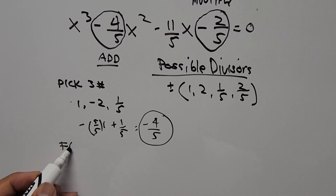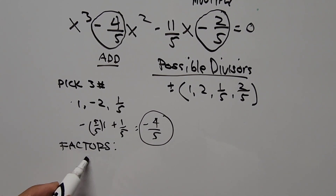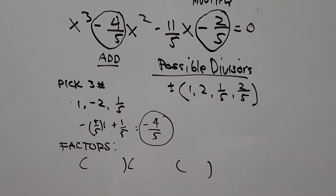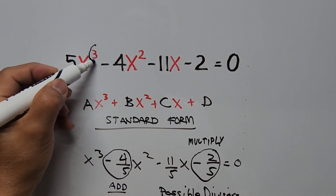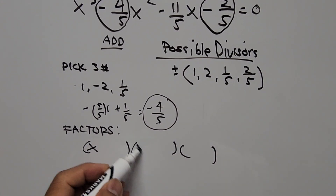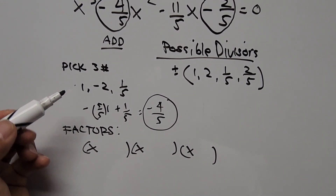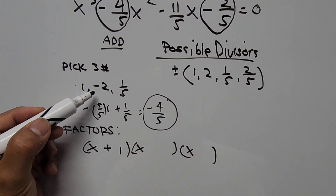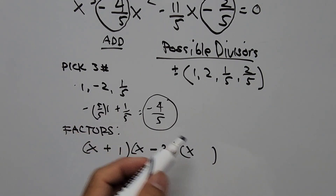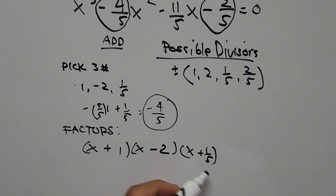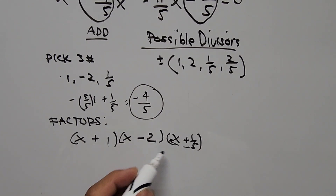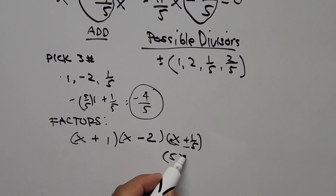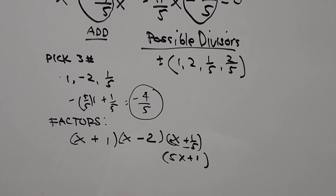So we have our three factors — since a cubic equation requires three values corresponding to the exponent 3 of the first term. We write: (x + 1), (x − 2), and (x + 1/5). This last factor can also be written with 5 as the coefficient of x, giving (5x + 1).